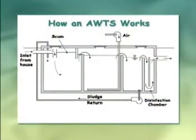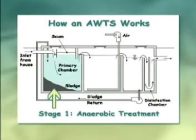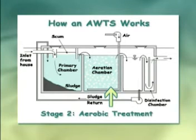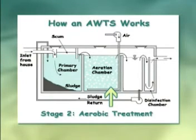Stage one is anaerobic treatment and removes bulk solids similar to a septic tank. Stage two is aerobic treatment, where a large volume of air is pumped into the chamber to promote the growth of aerobic bacteria, which efficiently and quickly break down and consume the remaining waste products. Some systems use electric pumps and air blowers, and some have an external in-ground sand filter as part of their treatment process.